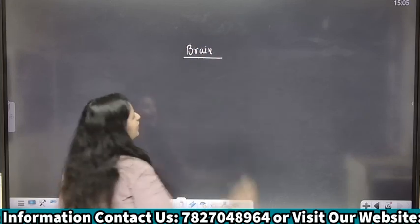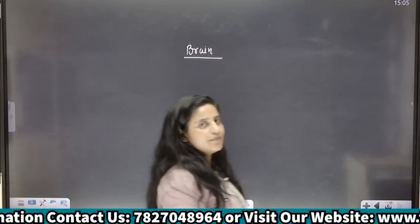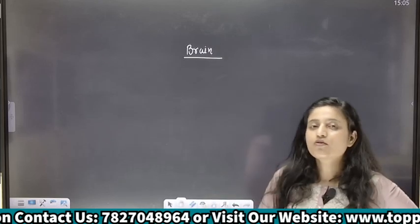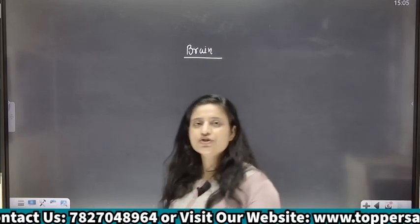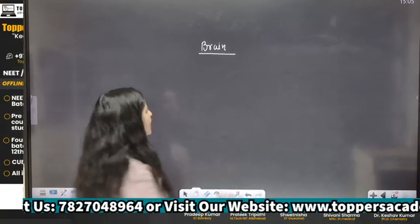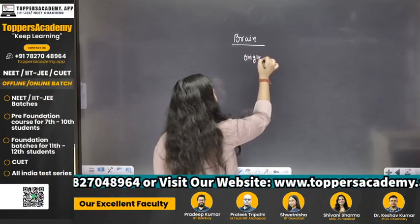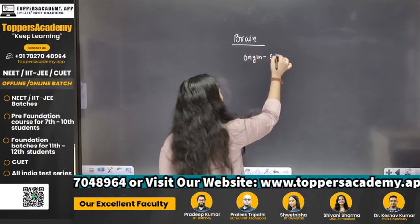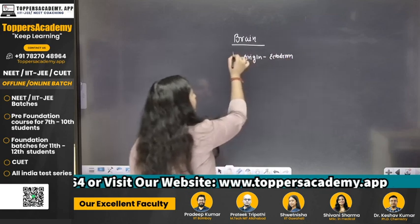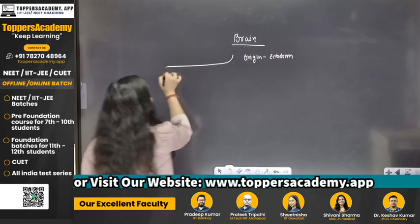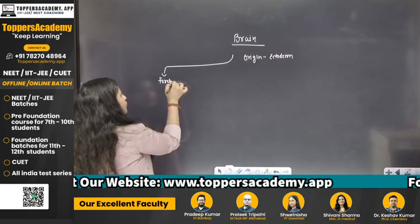So what is the origin of brain? From which germ layer is brain originated? Brain has been originated from the germ layer of ectoderm. So brain ka jo origin hai, it is ectoderm. Your brain is divided into three parts: first is your forebrain.